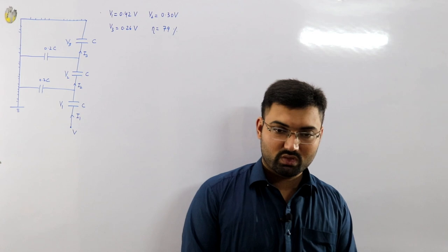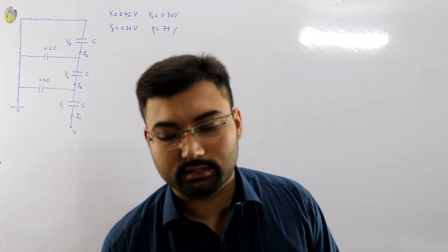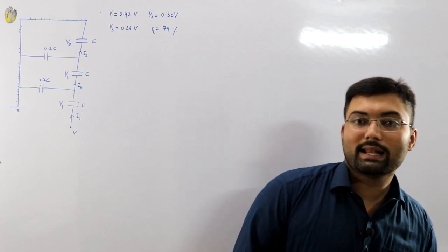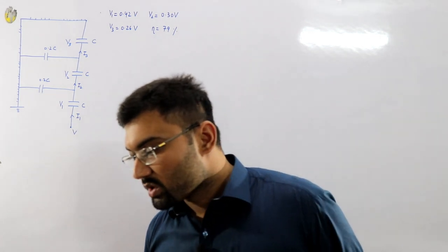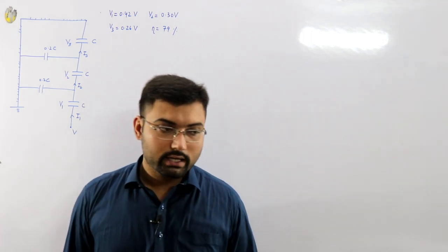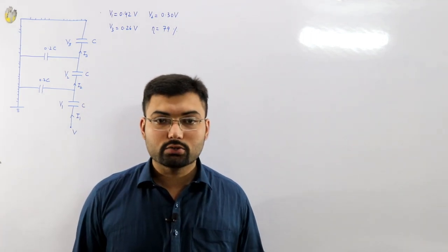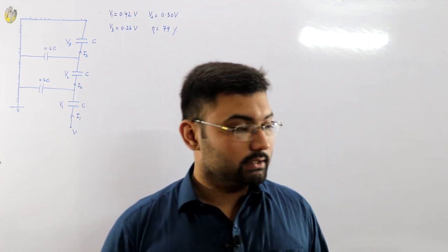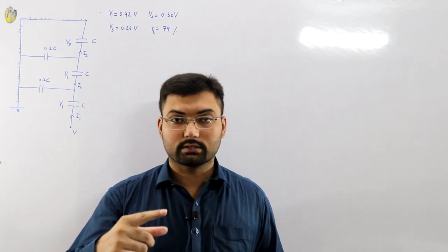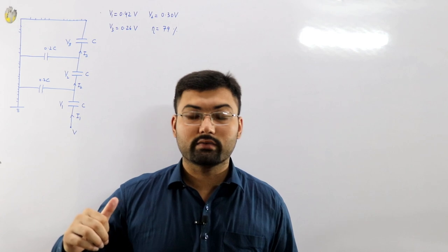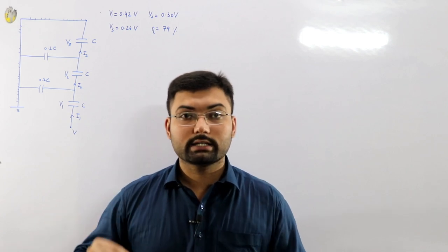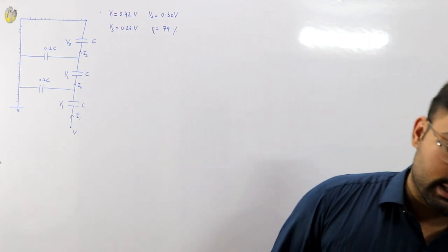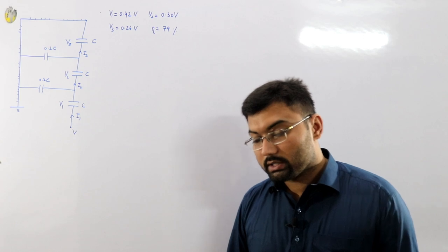Hello everyone, Assalamu Alaikum, welcome to Salah Khan's YouTube channel. We are discussing overhead line insulators. In the previous video we analyzed insulator strength. The insulator is used to isolate the bare conductor from the ground structure — the overhead transmission line is a bare conductor, and to support it you have the tower and cross arm, but you cannot electrically connect them as everything would be grounded.